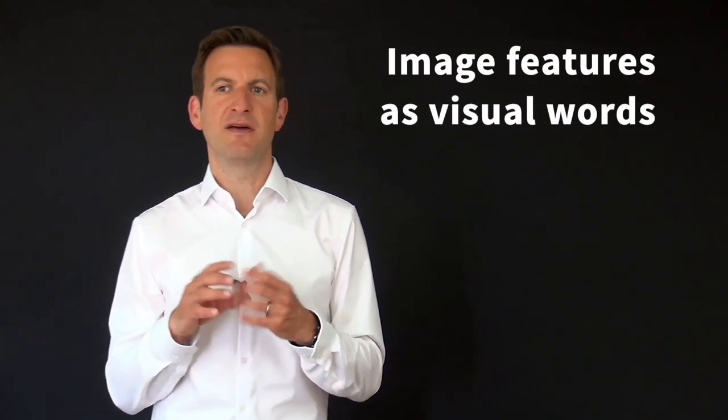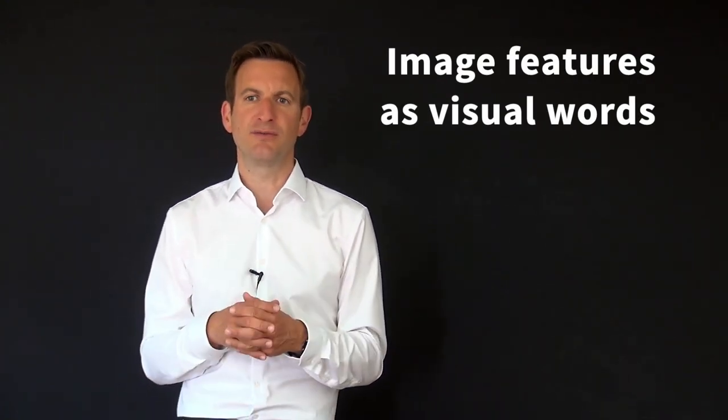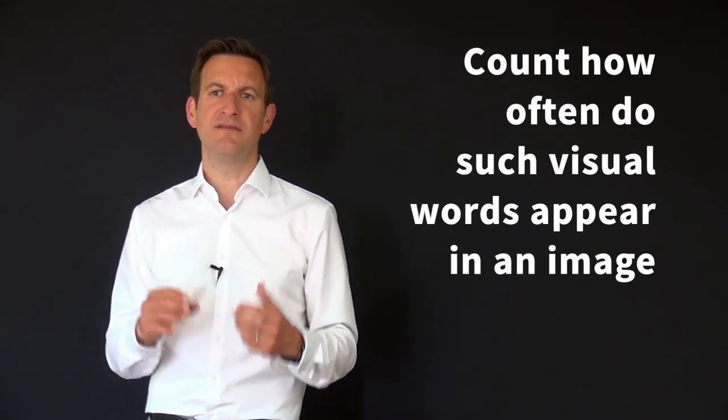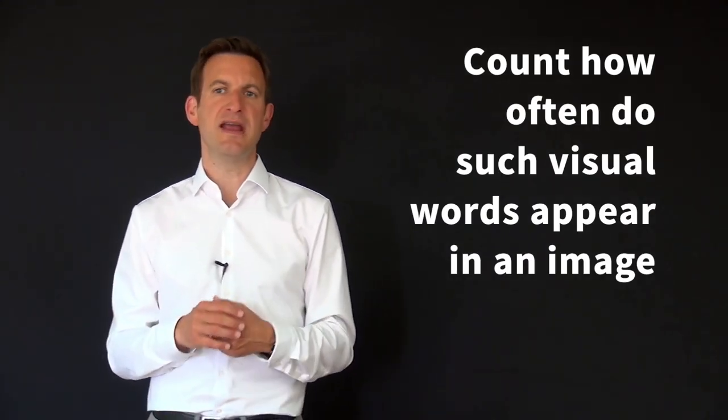So how does that work? The bag of visual words uses a set of image features as so-called visual words. It then describes the images by simply counting how often individual visual words appear in an image.